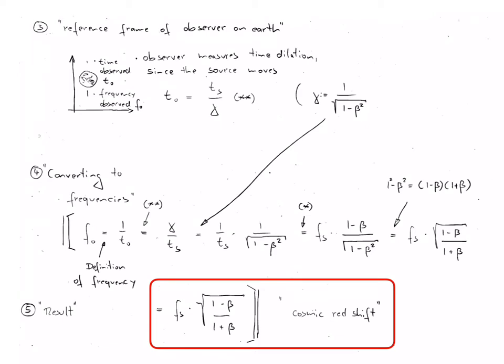This equation may be starred so that we can use it later. We now look at the situation from the system Earth, from the reference system Earth, where the observed time is labelled t0 and the frequency as it is observed is labelled f0.